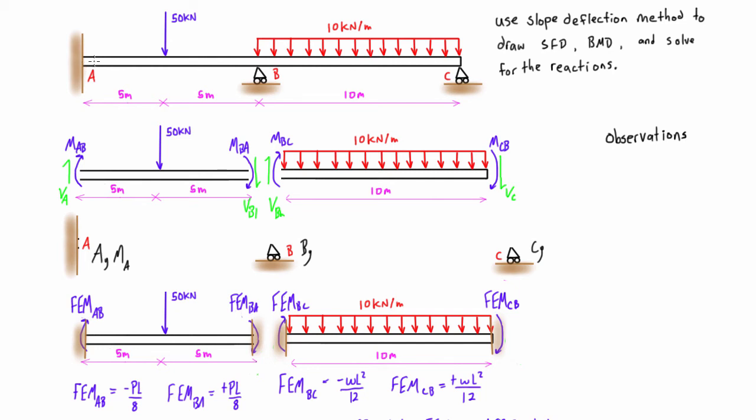Because when we look at reaction A here, we already know that the slope right at A is going to be zero, because of that fixed end connection. So theta A is going to be equal to zero.